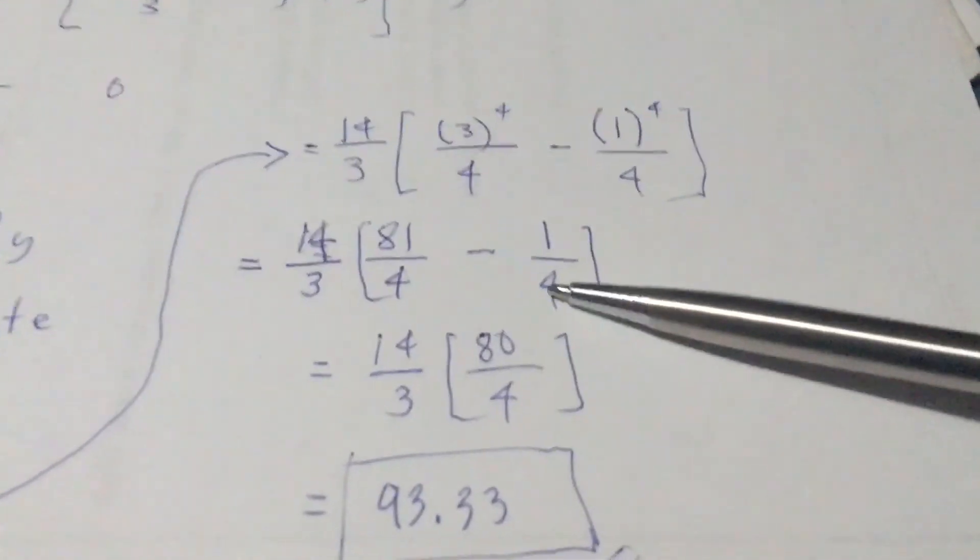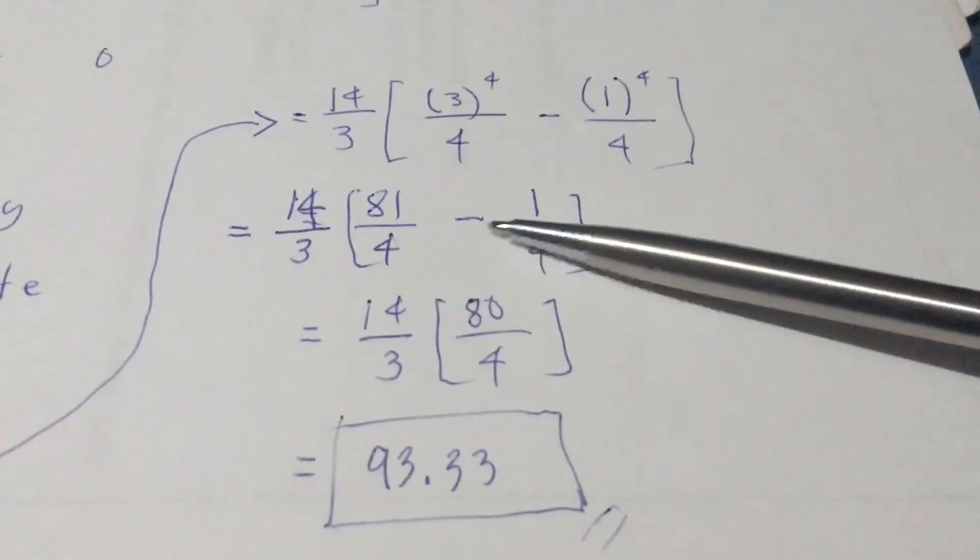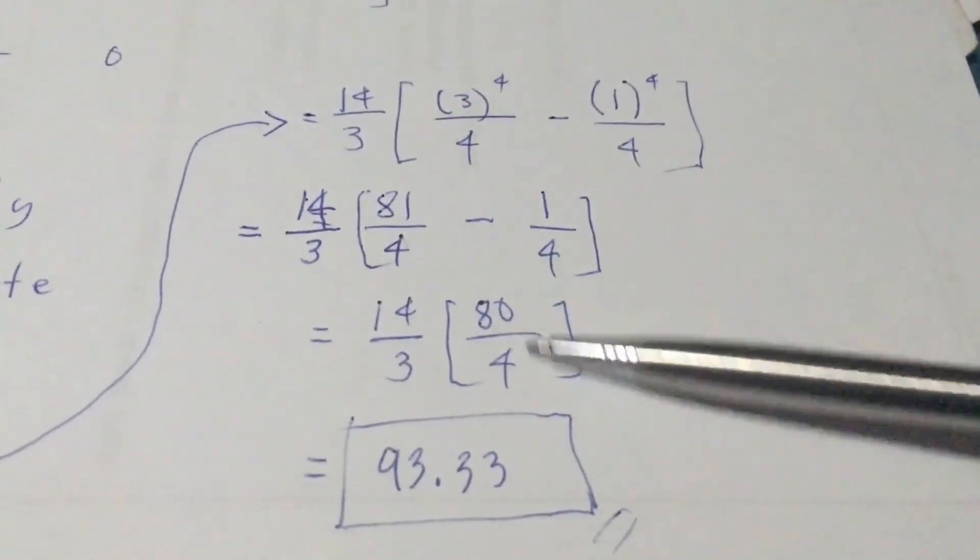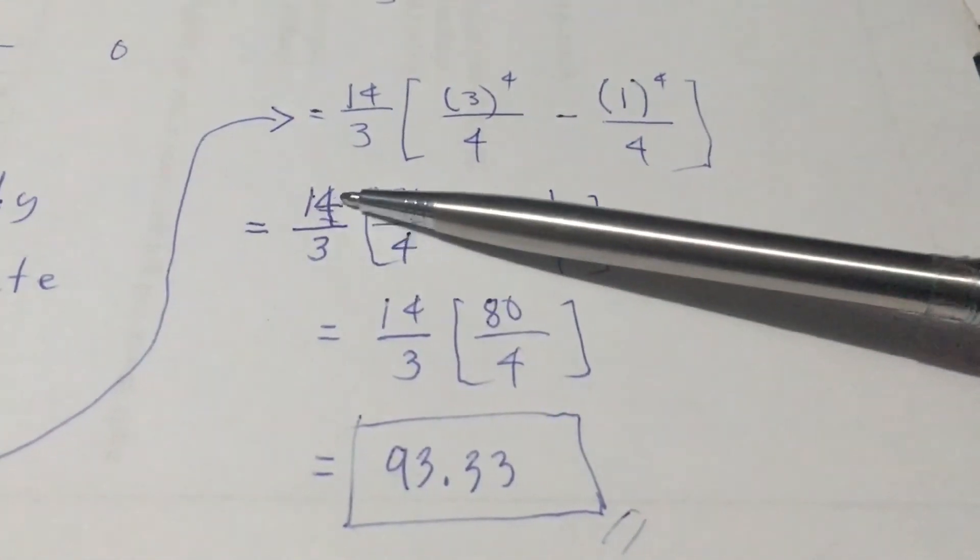After substituting that, evaluate it. After evaluating, 81 over 4 minus one fourth, that would be 80 over 4. Multiply the 14 over 3 to 80 over 4.